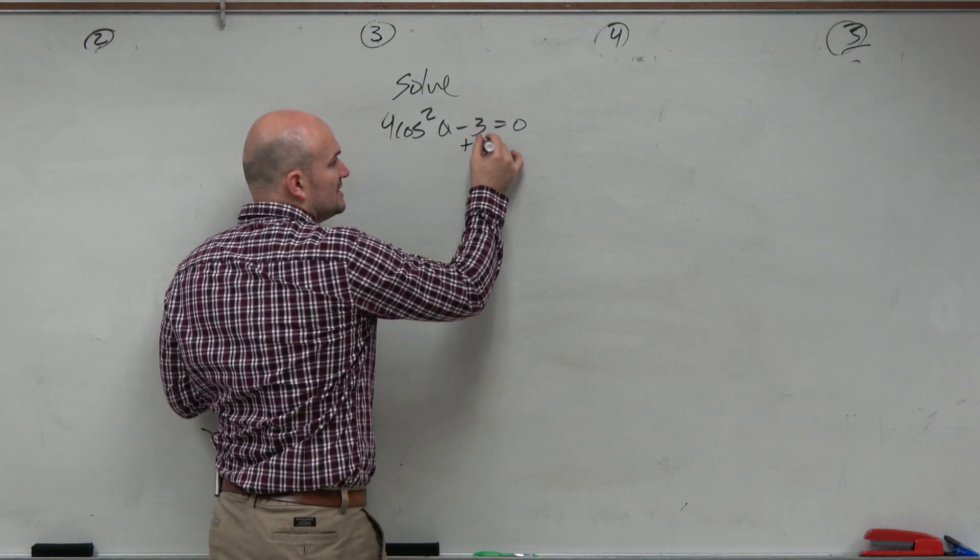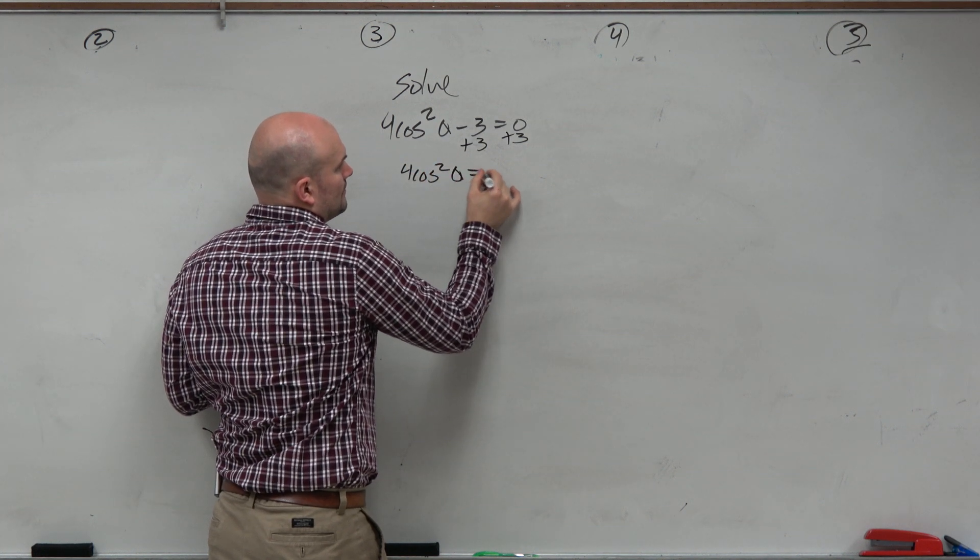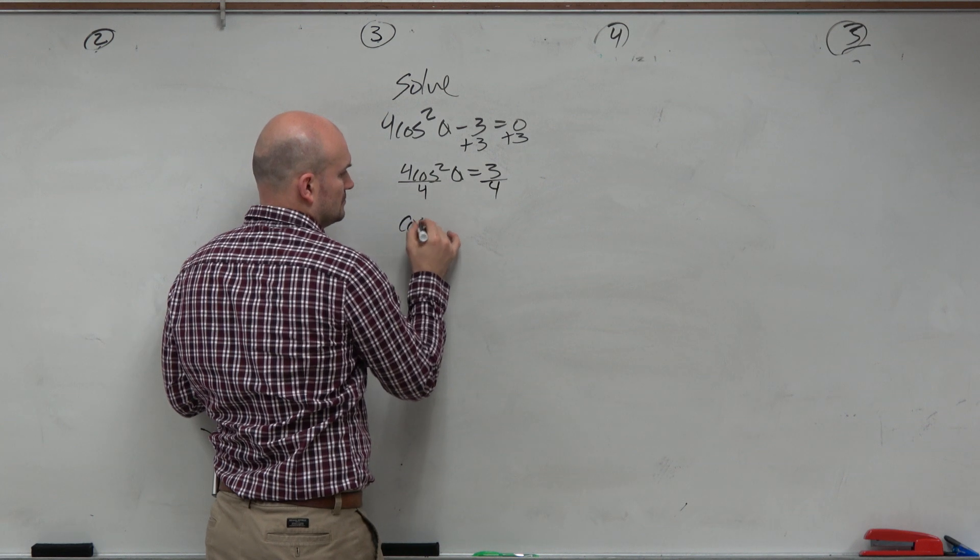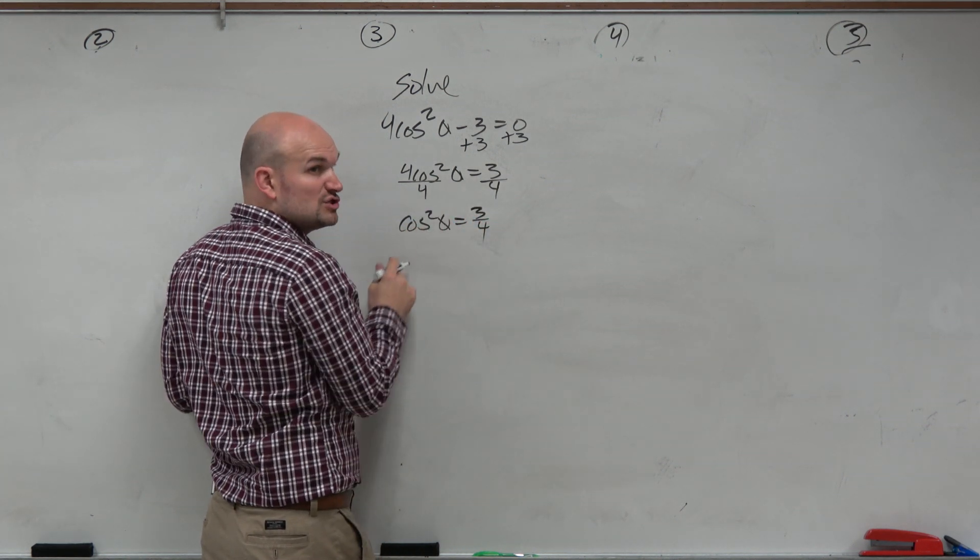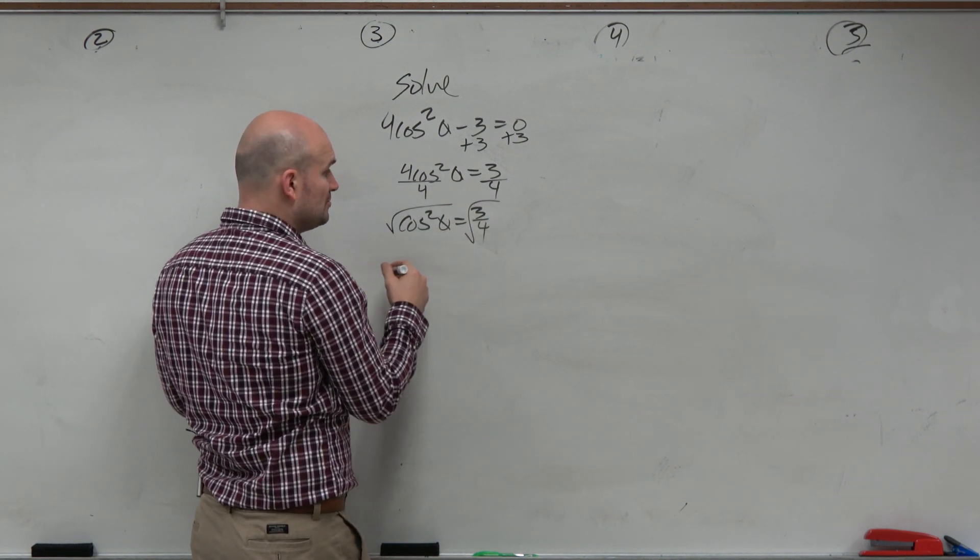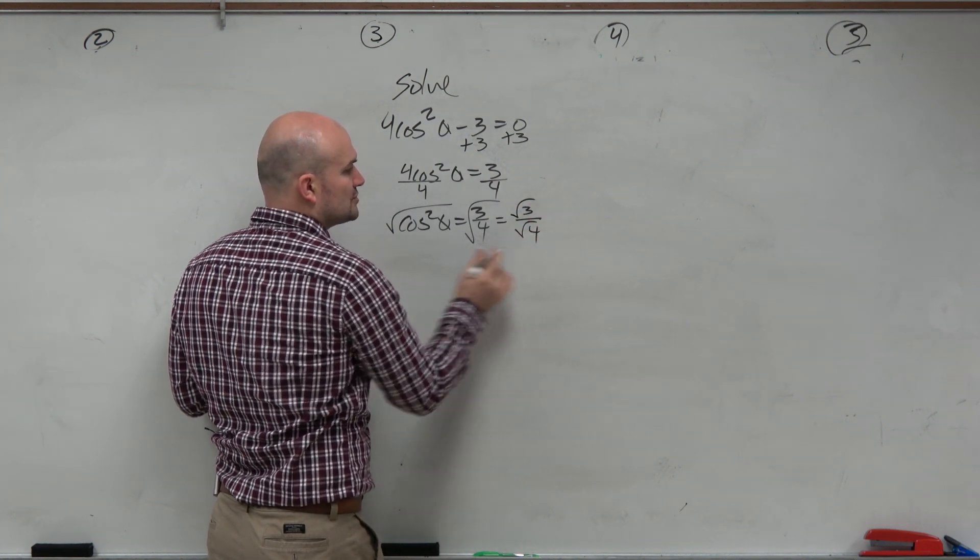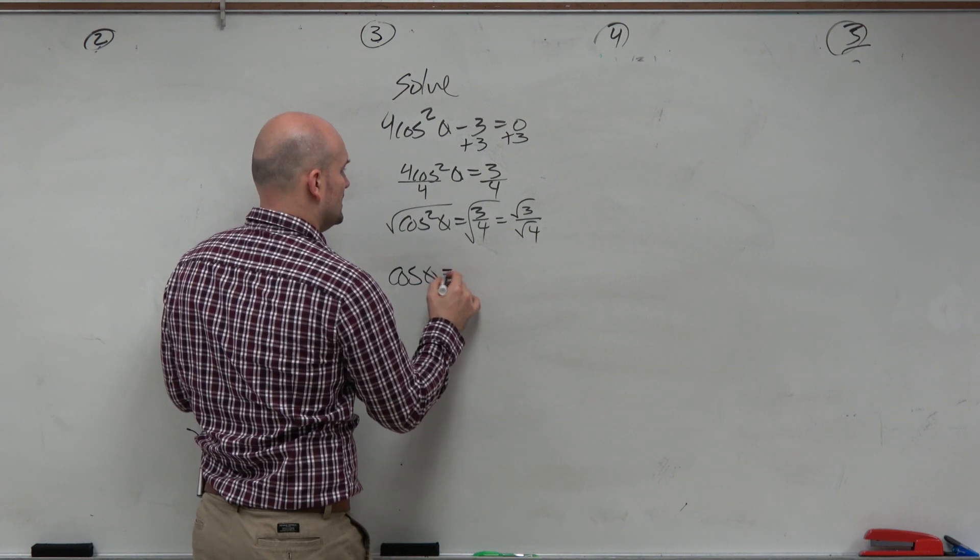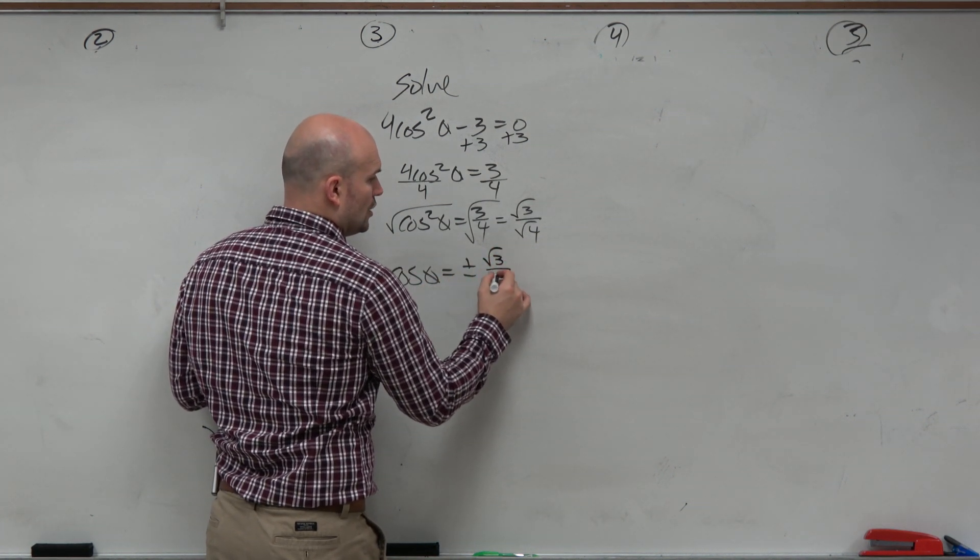So first thing we're going to do is add 3. Then, divide by 4. Then, to undo squaring, we're going to introduce the square root. And remember to include plus or minus. And remember that can be broken down into the square root of 3 over the square root of 4. So therefore, I have cosine of theta equals plus or minus, don't forget that, square root of 3 over 2.